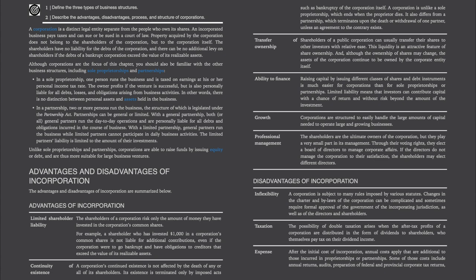Professional management — the shareholders are the ultimate owners of the corporation, but they play a very small part in its management. Through their voting rights, they elect a board of directors to manage corporate affairs. If the directors do not manage the corporation to their satisfaction, the shareholders may elect different directors.